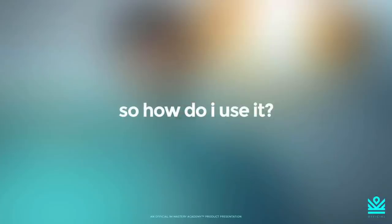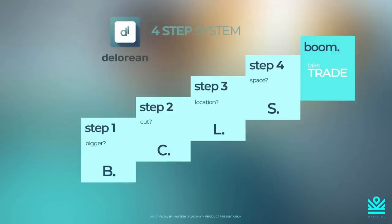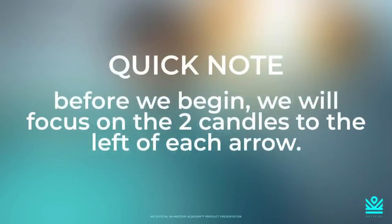Today's goal is to learn how to use all four steps to utilize these arrows. We have a simple four-step process — B.C.L.S.: Bigger, Cut, Location, Space. Now we're going to elaborate on these points, but before we do, I want to explain that we're going to be looking at the two candles to the left of the arrow. Instead of looking at the entire chart, we're only focused on two candles — getting away from all the noise in the market.